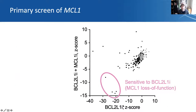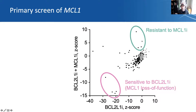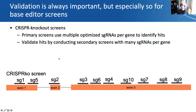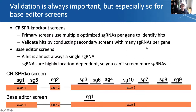The x-axis shows depletion in the BCL2-like-1 inhibitor arm, and the y-axis with the dual inhibitor. We do see numerous mutations where cells are sensitive to the BCL2-like-1 inhibitor — likely loss-of-function alleles of MCL1 — and dots up top are those resistant to the MCL1 inhibitor. With base editor screens, validation is especially important. In a traditional CRISPR knockout screen, if a couple of guides score, you can validate with more guide RNAs. But with a CRISPR base editor screen, it is almost always a single guide RNA, so you can't beat this down with numbers. The validation path is more essential.